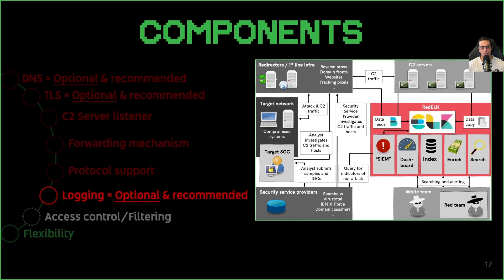For logging — it is not strictly necessary for redirection, but logging can be critical for operational security. By logging incoming connections, attackers can identify any potential investigative activities or attempts to trace back to the C2. Logs can help us in a deconfliction situation by allowing us to go back and see timestamped activity describing what happened and when. If you're especially concerned with covering your tracks, it might be beneficial to obfuscate logs to avoid leaving traces.